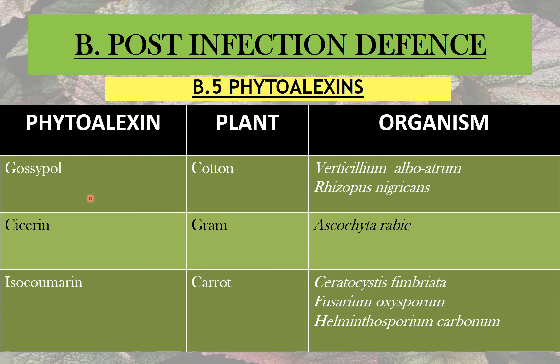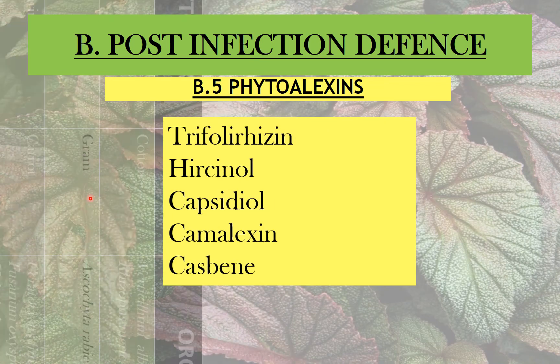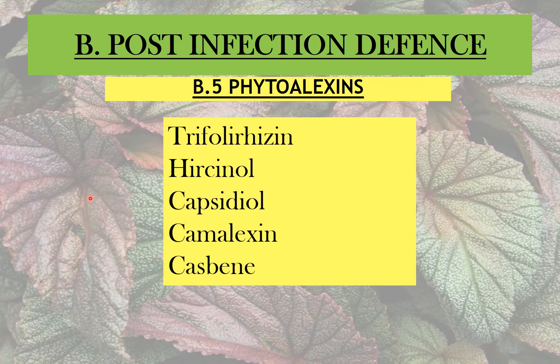There are some more phytoalexin examples including trypholyrisin or hircinol, capsidol, camalexin, and casbene. These are additional examples of phytoalexins produced by various other species of plants.